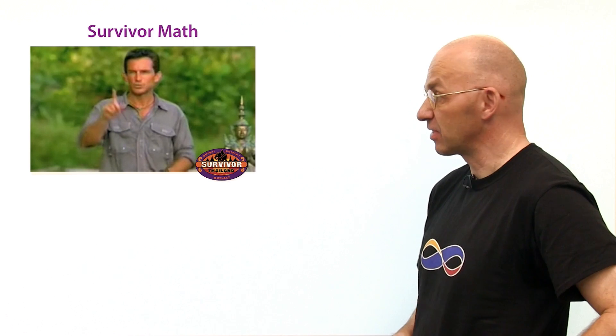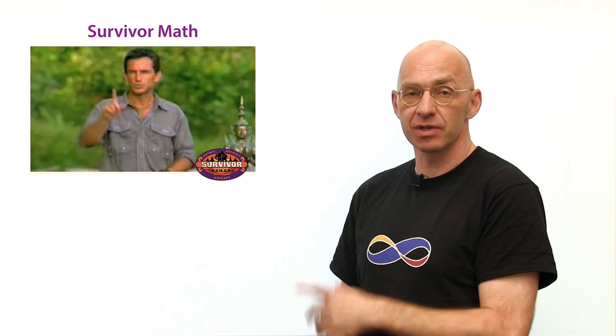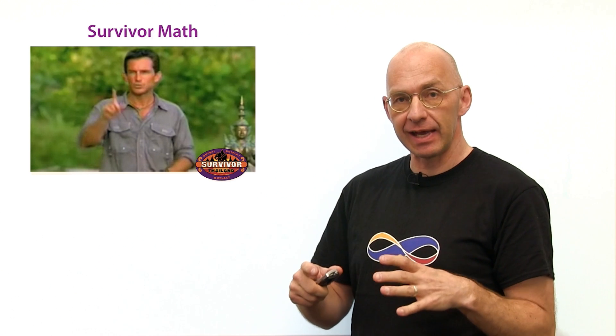Now just imagine you're Giuseppe. You're on the team. So you're on the team and you have to figure out what to do. So again, what are the rules of the game? You've got 21 flags in a circle.